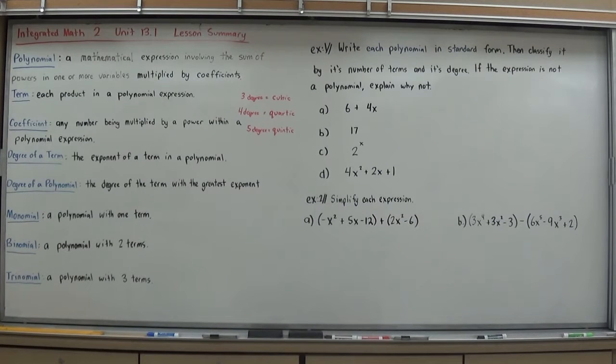Now, we can also classify by the number of terms. If it has only one term, it's a monomial, keyword mono, meaning one. Binomial is for two terms, keyword bi, bicycle, two wheels, two terms. And a trinomial, three terms, keyword tri, tricycle, three wheels, tri meaning three. So easy way to remember those, and I'm going to show you how to name them in a moment.